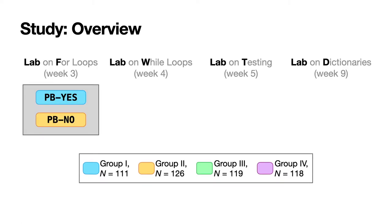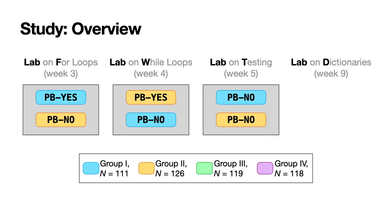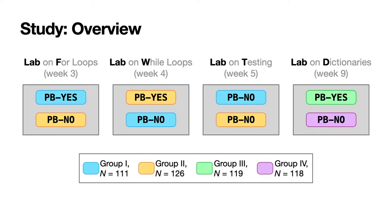In lab F, group 1 used PBS and group 2 used PBNO. In lab W, we kept the group assignments but switched the environments they used, so that group 2 used PBS instead and group 1 used PBNO. In lab T, the group assignments remained the same but everyone used PBNO. And finally in lab D, we assigned students to groups 3 and 4, where group 3 used PBS and group 4 used PBNO.